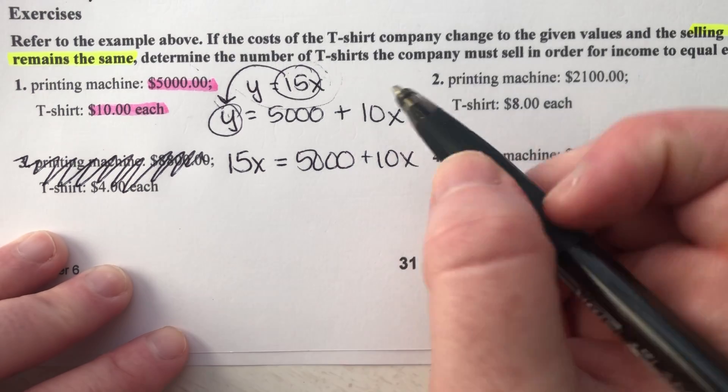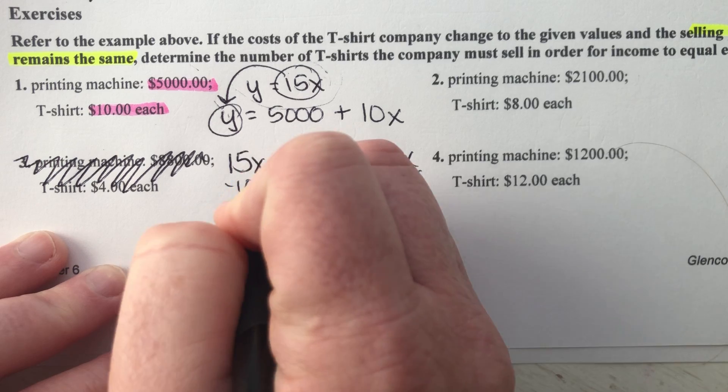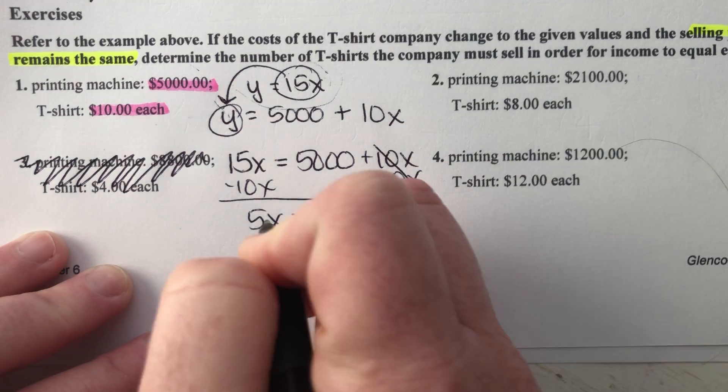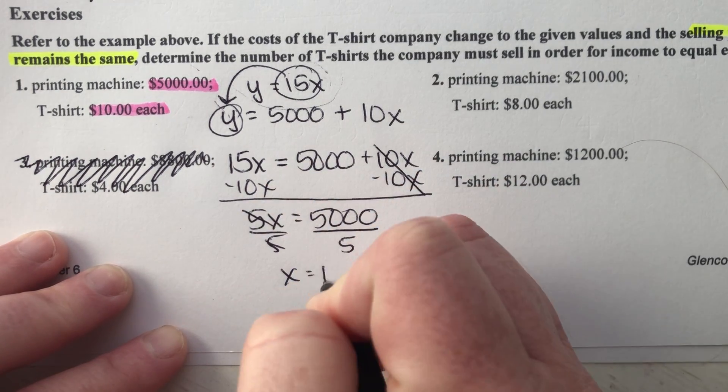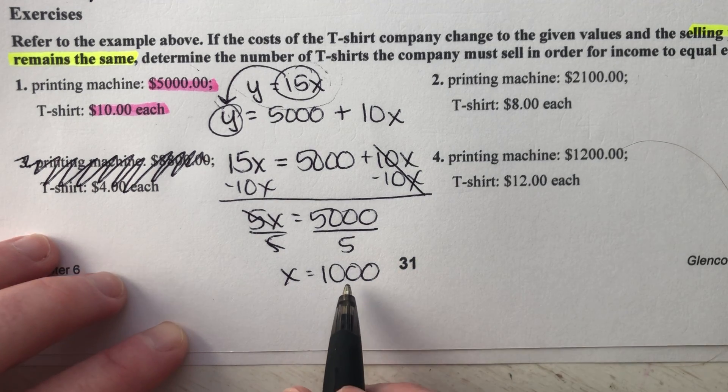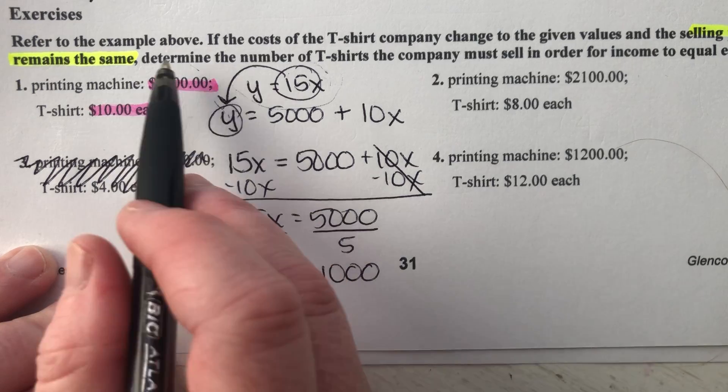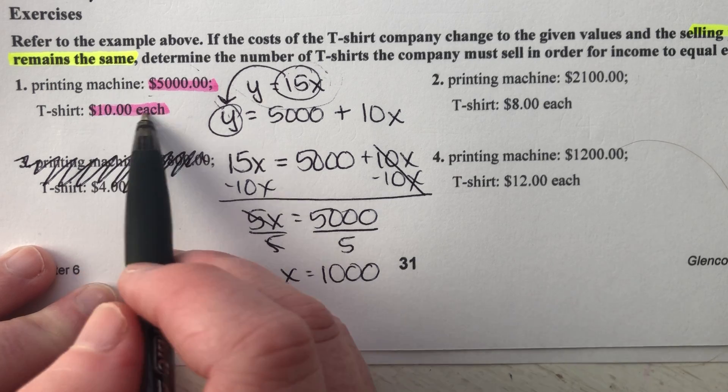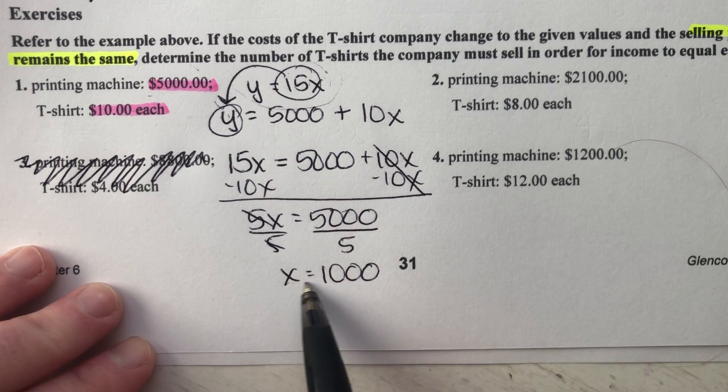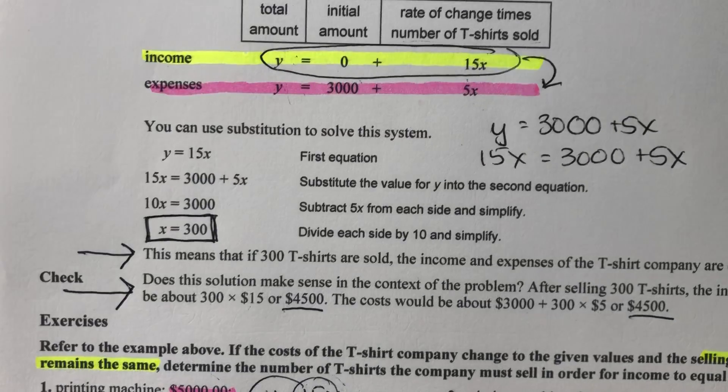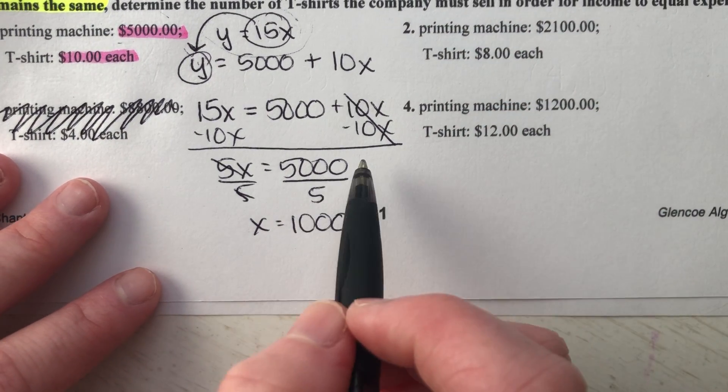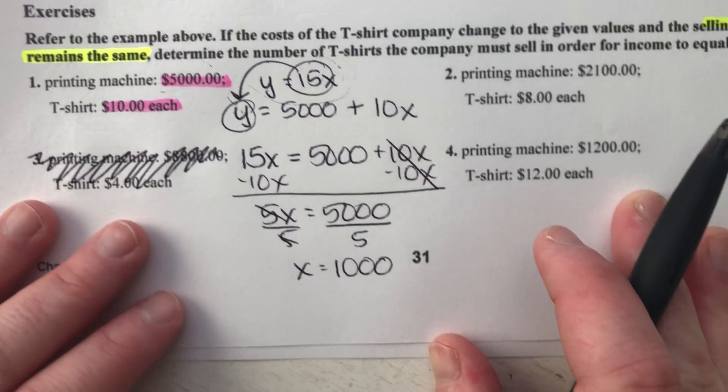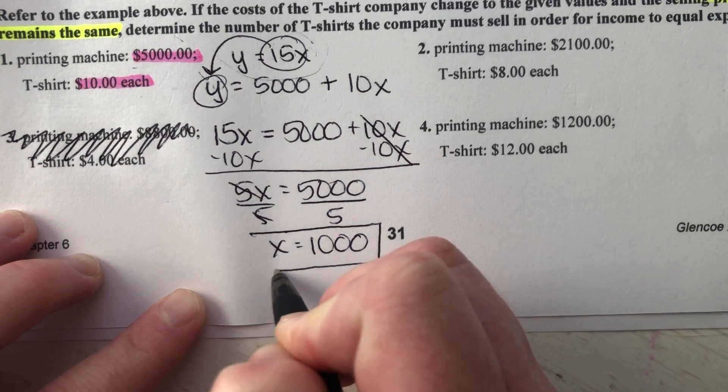15X and 10X, I got to get rid of the smallest X. So I'm minus 10X on both sides. These go away. 5X equals 5,000 divided by 5. So we're going to have to sell 1,000 shirts. We're going to have to sell 1,000 shirts in order to break even if we had spent a lot more money up front on our machine and if we had to spend more money on the t-shirts. We're going to have to sell a lot more shirts. Instead of 300, like up here, we're going to have to sell 1,000. That's a lot. That's why businesses always want to try and cut their costs way down, the expenses they have. Shop around and find the cheapest materials.